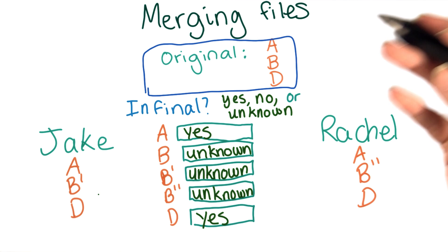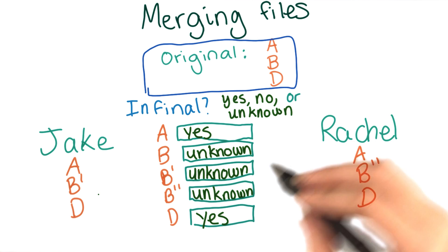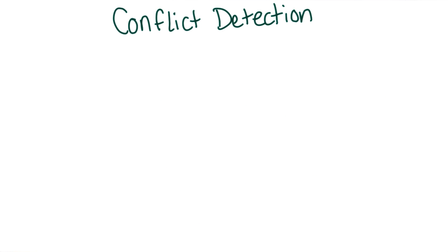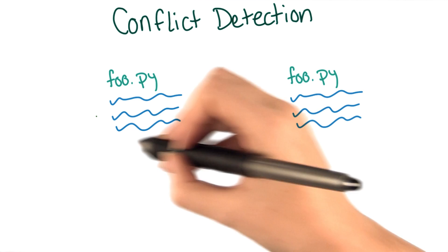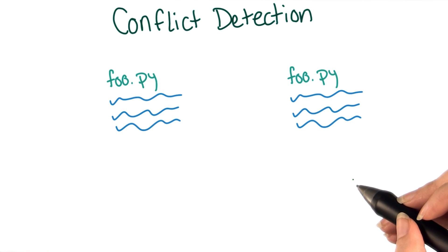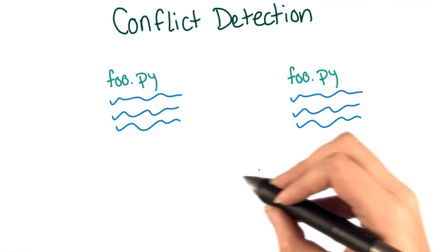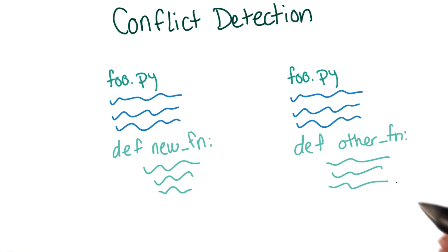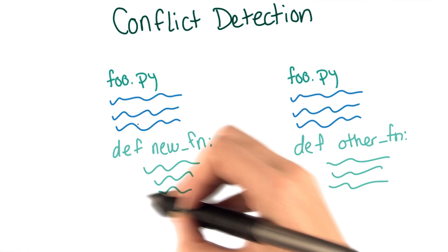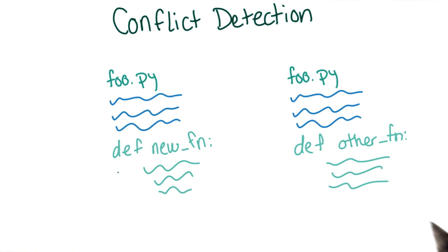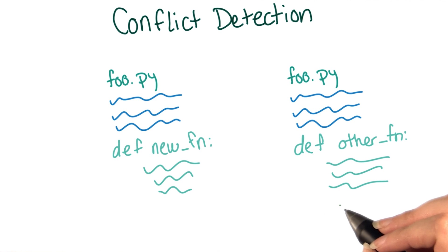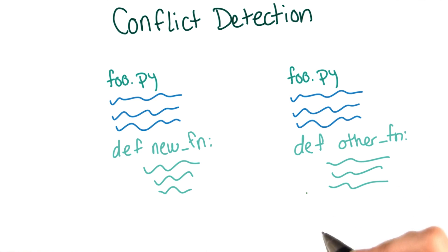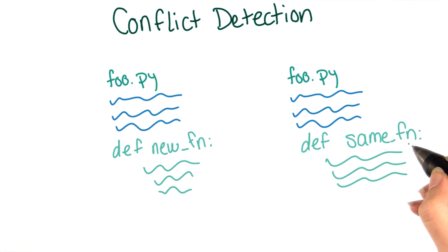So how does git know whether or not there should be a merge conflict? Consider the following two examples. In both cases, we start with two identical copies of the same file. In the first case, two different contributors add new functions to the bottom of the files. These are different functions that don't interact with each other. However, in the second case, two different contributors add different implementations of the same function with different names.